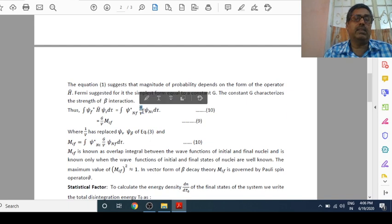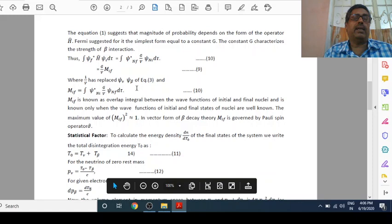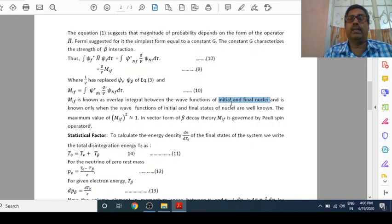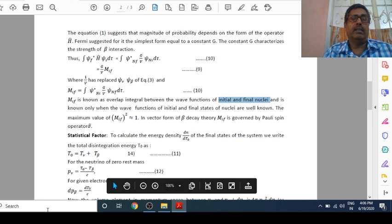The equation suggests that the magnitude of probability depends on the form of the operator. Fermi suggests that H in its simplest form equals constant G. This can be written as G/V times M_IF, where 1/V has been replaced by Ψ_ν Ψ_β from equation 3. M_IF is known as the overlap integral between the wave functions of initial and final nuclei, and is known only when the wave functions of initial and final states are well known. The maximum value of |M_IF|² is approximately equal to 1. In vector form beta decay theory, M_IF is governed by Pauli spin operator σ.